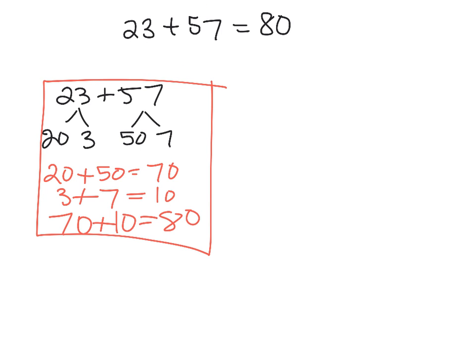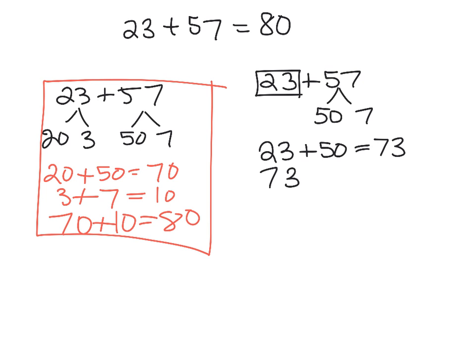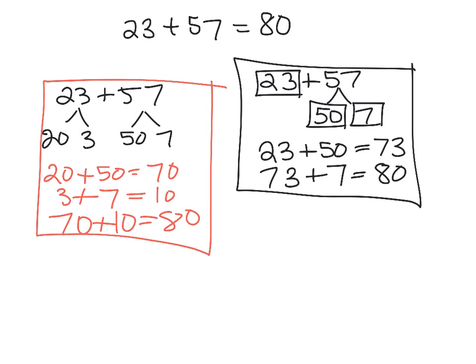Another method that a student might use to do 23 plus 57: another student might say, I'm going to decompose 57 to 50 and 7, and I'm going to take that 23, I'm going to add my 50, that gives me 73. Then I'm going to take the 73 and add in the remaining 7, and that gives me 80. That's another method that a student might use.